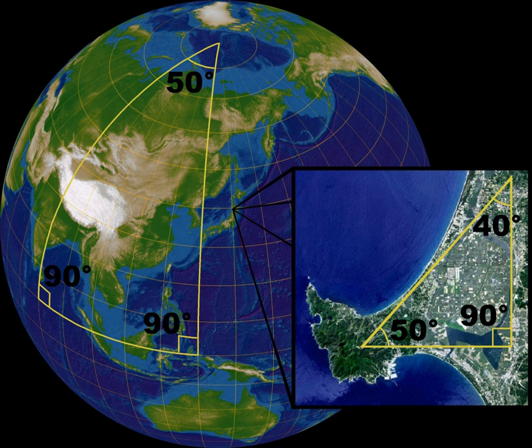The essential difference between the metric geometries is the nature of parallel lines. Euclid's fifth postulate, the parallel postulate, is equivalent to Playfair's postulate, which states that within a two-dimensional plane, for any given line and a point A which is not on it, there is exactly one line through A that does not intersect. In hyperbolic geometry, by contrast, there are infinitely many lines through A not intersecting, while in elliptic geometry, any line through A intersects.